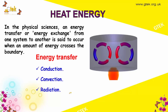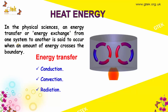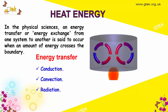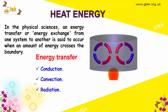If we look at heat energy in terms of physical science, an energy transfer or energy exchange from one system to another occurs when an amount of energy crosses the boundary between systems. Energy transfer is also called heat exchange, and it has three kinds of properties: the first is conduction, the second is convection, and the third is radiation.